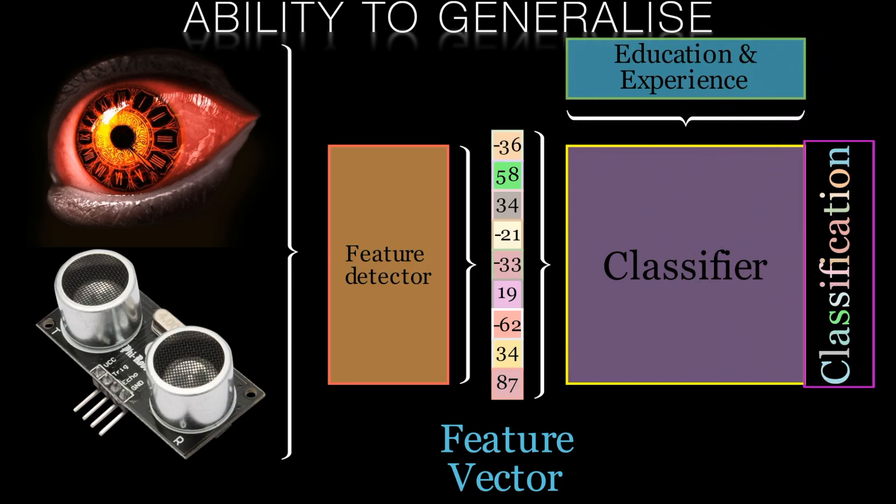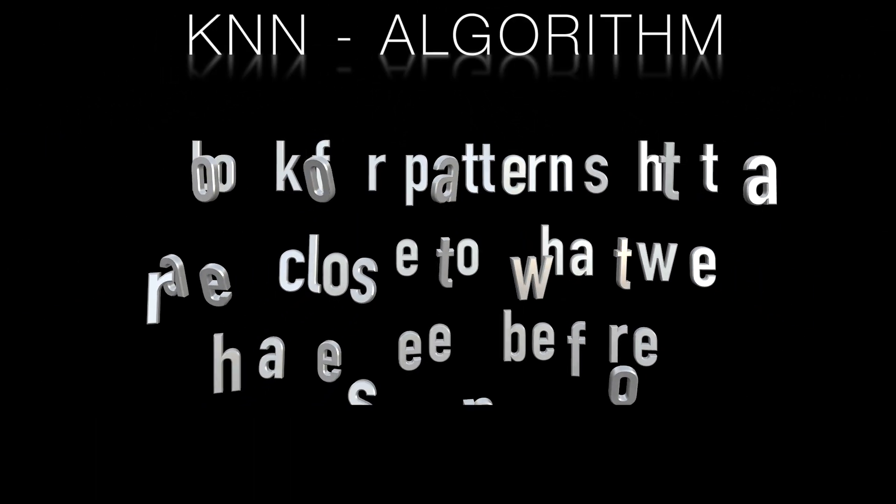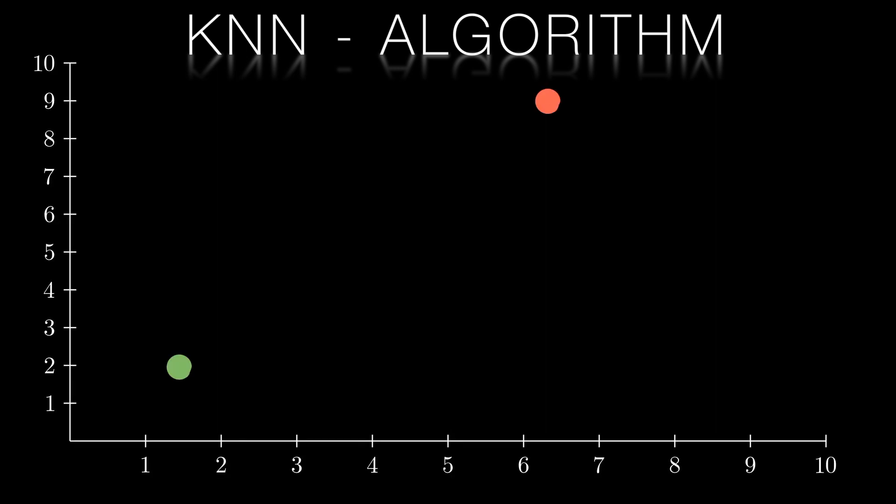So this principle carries over to the design of the k-nearest neighbors algorithm. We look for features that are a close enough match to a pattern that we've seen before. Let's first look at a simple example and then apply it to a more complex case from our loan default data set.